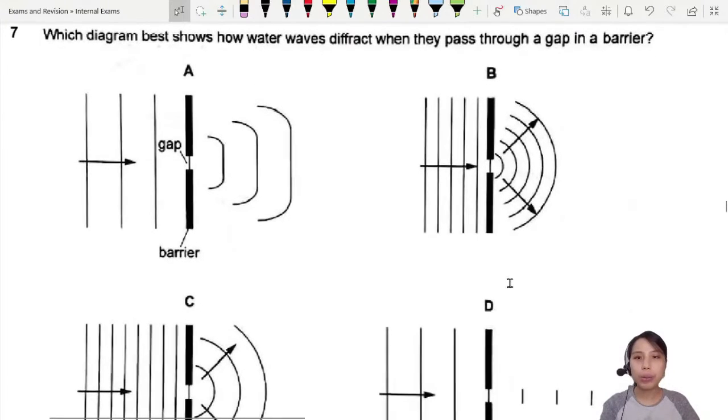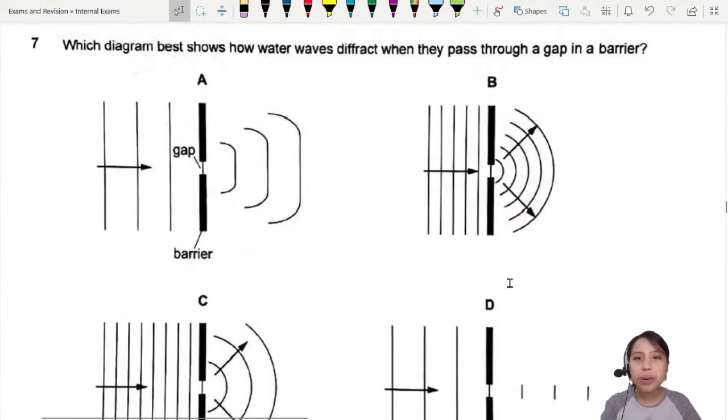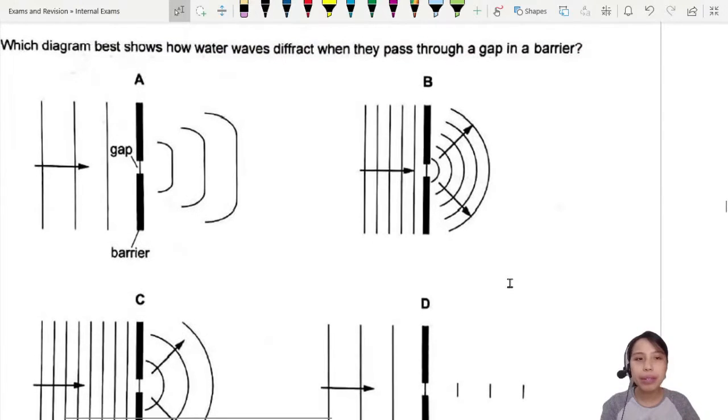Which diagram best shows how water waves diffract when they pass through a gap in the barrier?